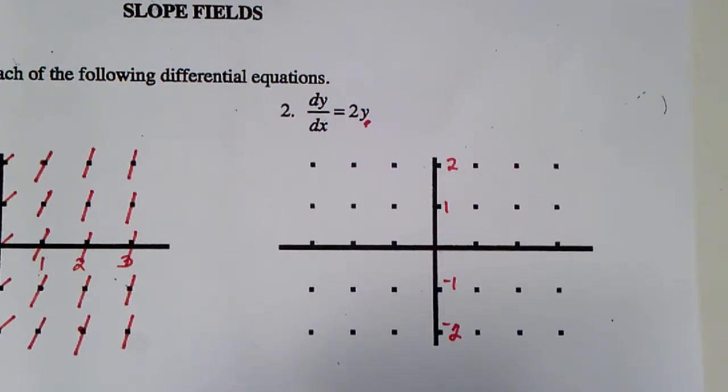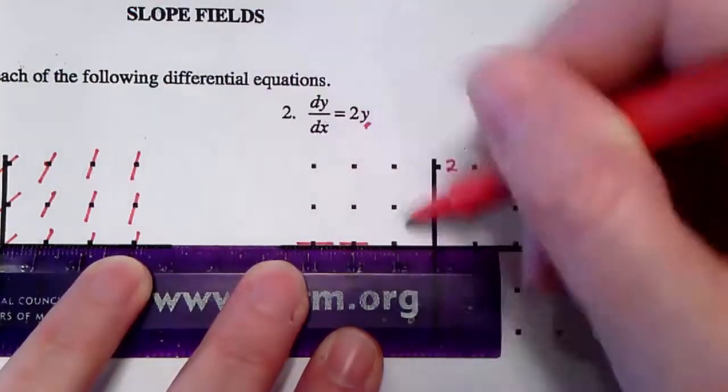If we were to think first about where it is we would have a horizontal slope cut, meaning a slope of zero, that is going to happen any time the y-value is zero, so right here on the x-axis.